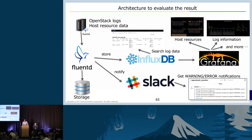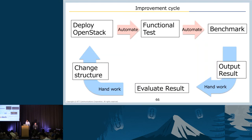Explaining the details would take a long time, so if you want to know more, feel free to reach out to us — we are at the NTT comms booth. To summarize, I have explained OpenStack deployment, functional test, benchmark, and evaluation. This is the end of our system architecture for deploying with production quality.